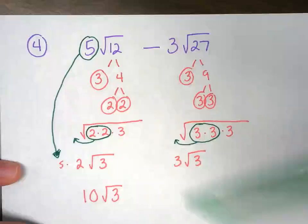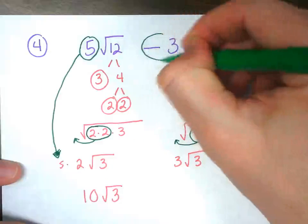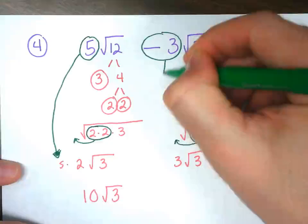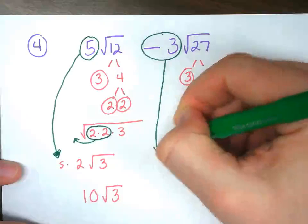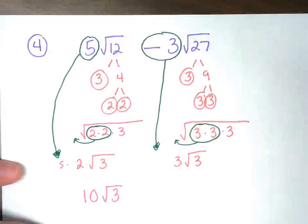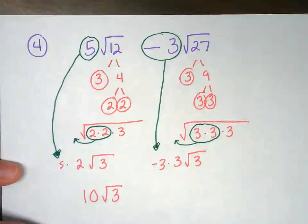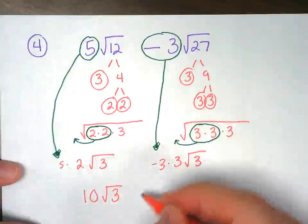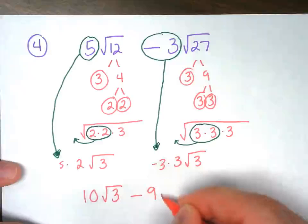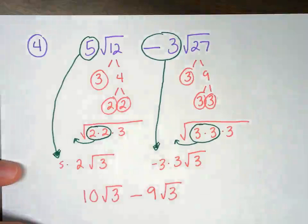And again, don't forget about the Uber driver. Notice this is a minus question, so we're going to treat it as a negative. And we're going to multiply it as such so that negative 3 comes down. So you have negative 3 times 3, which equals negative 9. And then √3 stays the same.